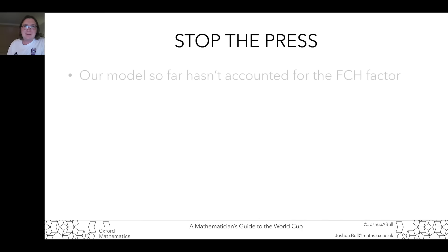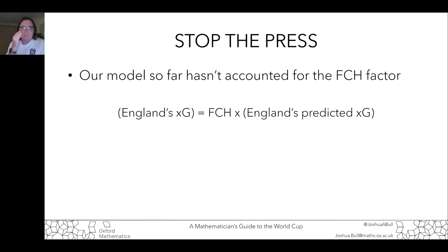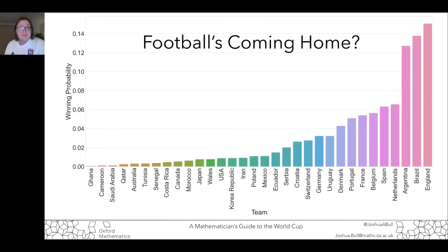Stop the press — one last minute change to the model: we haven't included the FCH factor at all. The FCH factor is a technical mathematical term for those unfamiliar with it — a value which scales the England team's XG based on whether or not football's coming home. The FCH factor only needs to be about 1.7 in order for England to top the table. So it's not unlikely... well, it's quite unlikely.